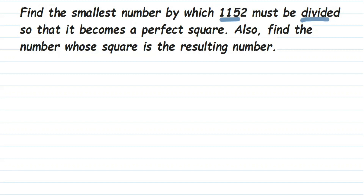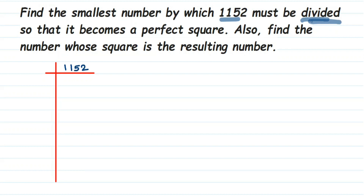So first we're going to find out the smallest number. Whenever you see this type of question where they're asking for the smallest number to be divided or multiplied, in those cases you have to use the prime factorization method. We're going to prime factorize this number and see which prime factor is extra. So let's start — we have 1152, which is an even number, so I'm going to start with 2.